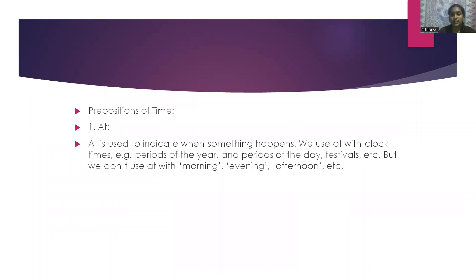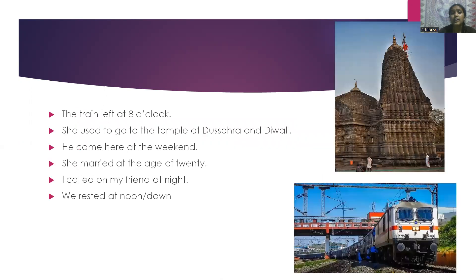The word is 'at'. At is used to indicate when something happens. We use 'at' with clock times, periods of year and periods of day, festivals, etc. But we don't use 'at' with morning, evening, afternoon, etc. For example: the train left at 8 o'clock. She used to go to temple at Dasara and Diwali.